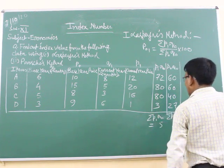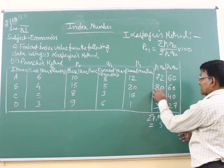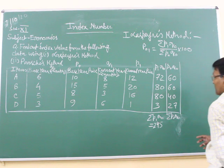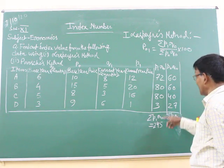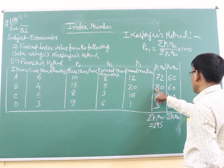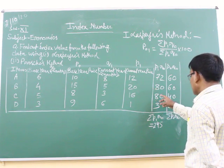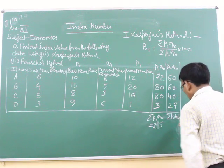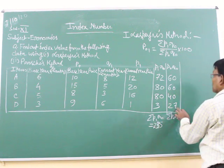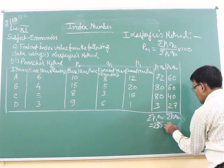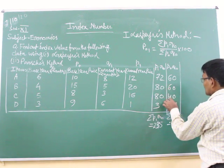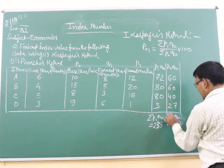3 plus 8 is 11, carry over 1. 8 plus 8 is 16, 17. 7 plus 7 is 14, 24. It is 235. Next one is P0Q0. 10 times 6 is 60. 15 times 4 is 60. 5 times 8 is 40. And the last one is 9 times 3 is 27. The total is 187.